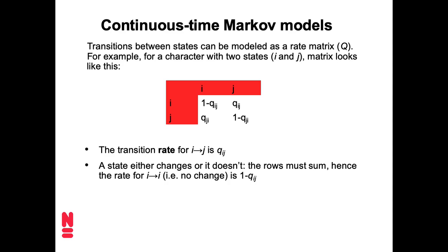I changes into J and J changes into I? So then we get basically a two-by-two matrix where we might say the transition rate for going from an I to a J is QIJ. So that is the cell on the top right. Or we can also say the opposite. What's the rate for going from a J to an I? Well, that might be QJI.